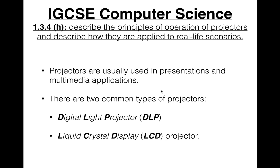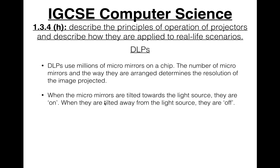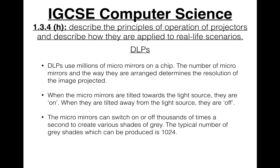DLPs use millions of micromirrors on a chip. The number of micromirrors and the way they are arranged determines the resolution of the image projected. When the micromirrors are tilted towards the light source they are on; when they are tilted away from the light source they are off.